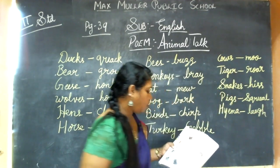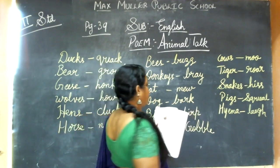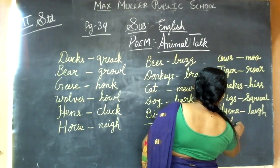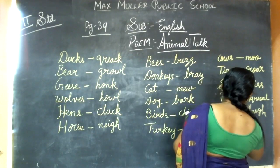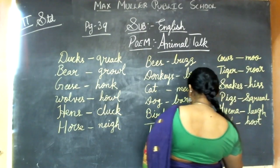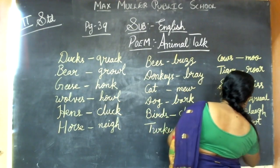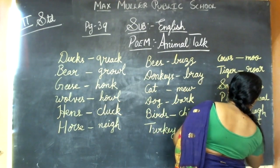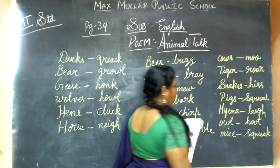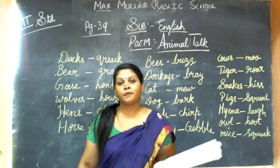Owls hoot and mice squeak. The sound of the owl is hoot. And mice squeak — S-Q-U-E-A-K, squeak. Animals show how they love to speak.